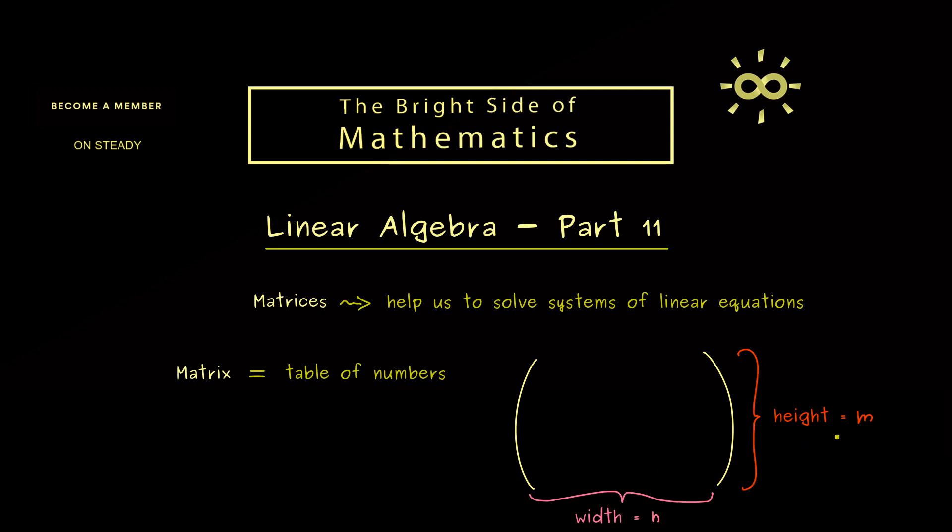This means in this table we have m times n positions we can fill in with numbers. And often we just call the numbers a and put an index on it. Therefore the first position here should be 1,1. Then here in the second position we have 1,2. Hence the first position here tells us in which row we are, and the second in which column we are. So this is something you can immediately remember. From top to bottom we have rows, and from left to right we have columns. Therefore for our indices this means we continue until we reach 1,n.